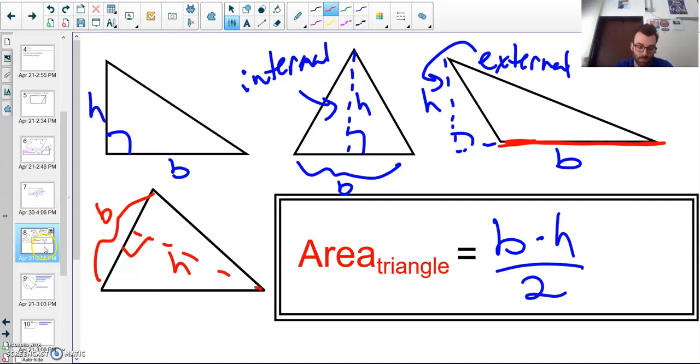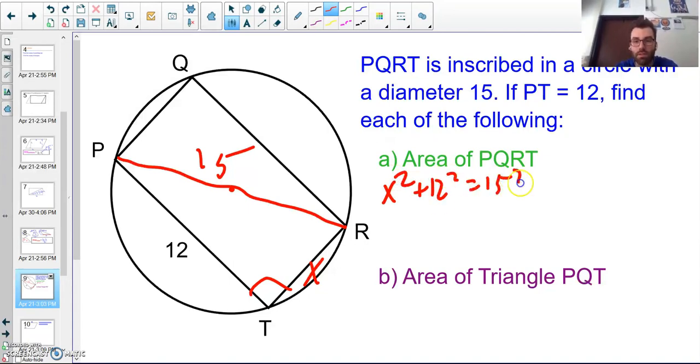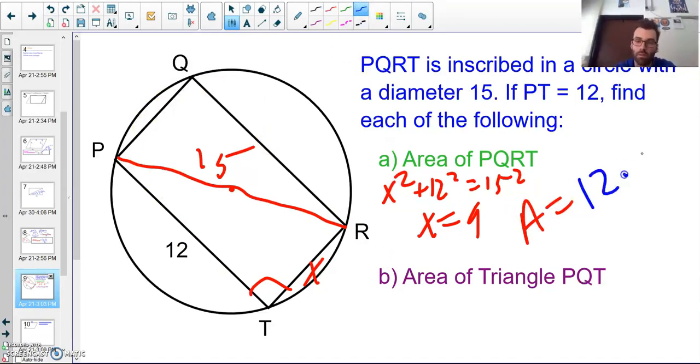Let's try an example. PQRT is inscribed in a circle with a diameter of 15. If PT equals 12, find each of the following. I'm going to connect P to R going through the center—this is 15. Find the area of PQRT. If I know this is a right angle, this is 15 and 12, and I want to find this side, what am I going to have to do? Call this x. Go ahead, pause it. X squared plus 12 squared equals 15 squared, and you should get 9. Yes, x is 9.